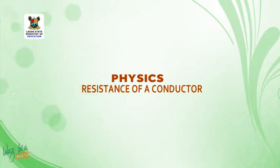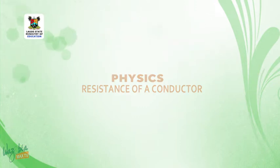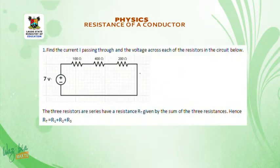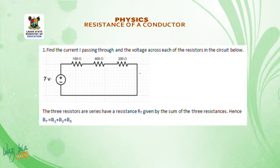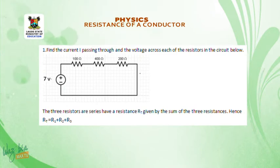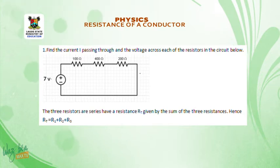Welcome back. Let us look at some activities. Question one: find the current passing through and the voltage across each resistor in the circuit below. We have three resistors — R1 with 100 ohms, R2 400 ohms, R3 200 ohms — connected in series in a circuit with a potential difference of 7 volts.